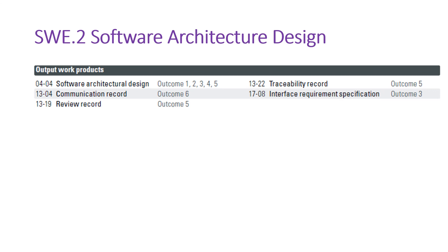As output work products: from base practices one through five, we produce the Software Architecture Design Document (High-Level Design document). From BP6, we have a communication record. From BP8, we have a review record. From BP7, we have a traceability record. And from BP3, we have an interface requirement specification.